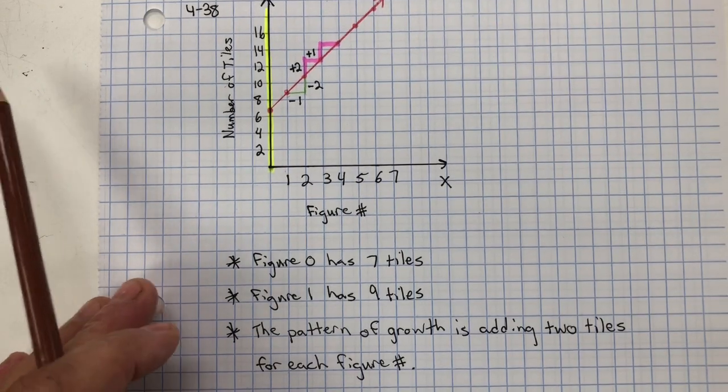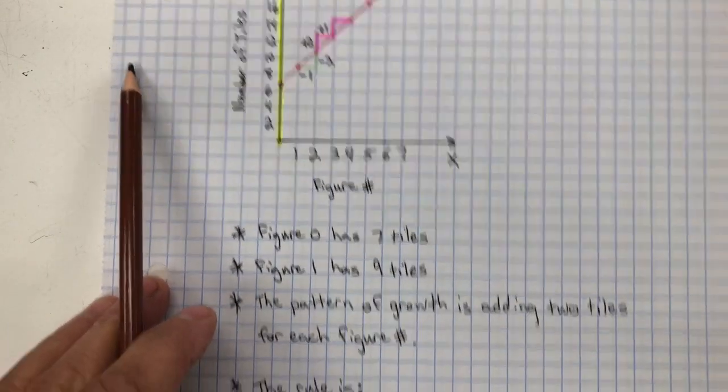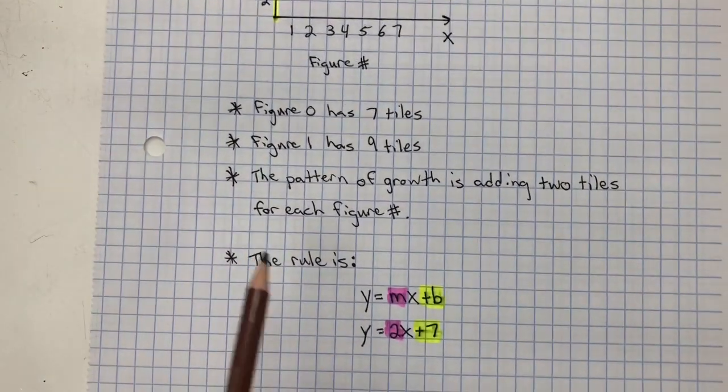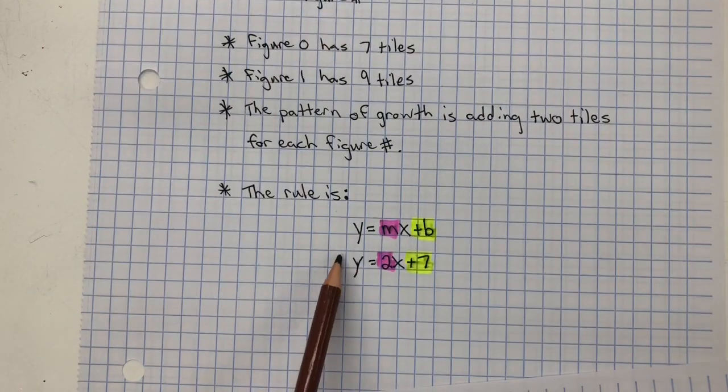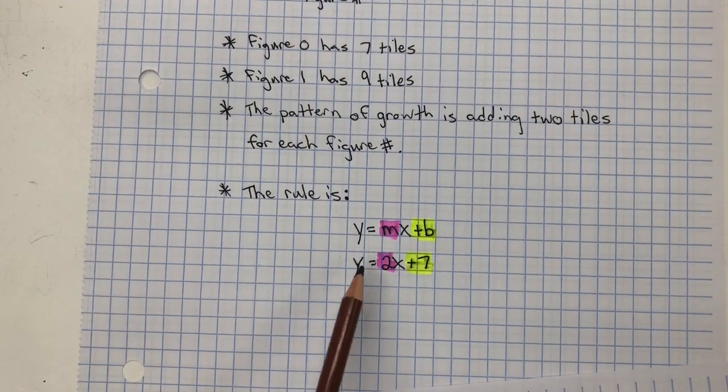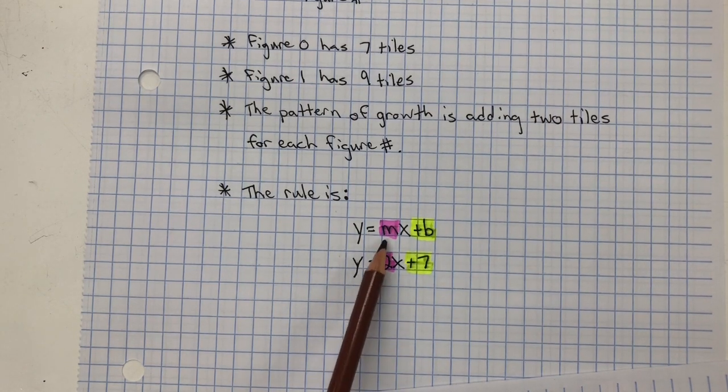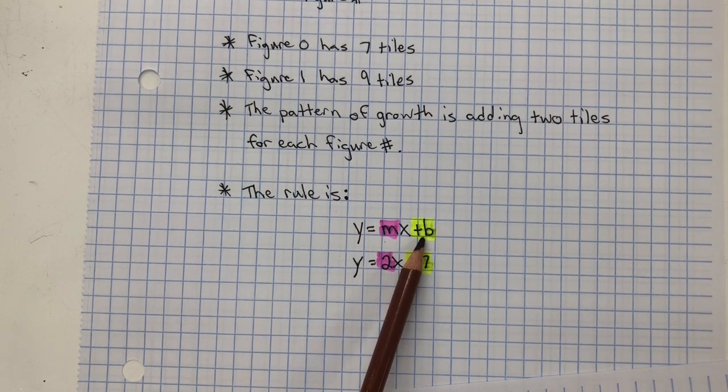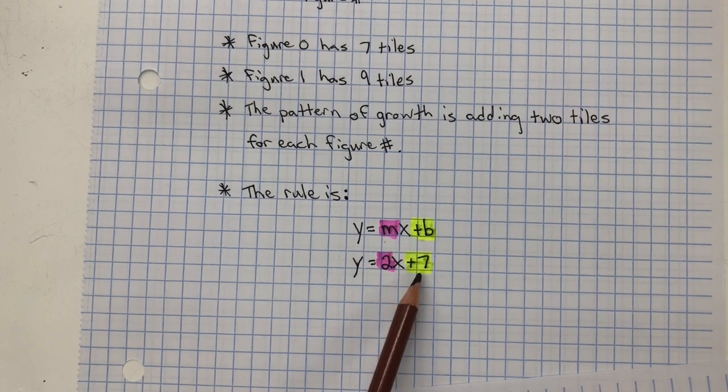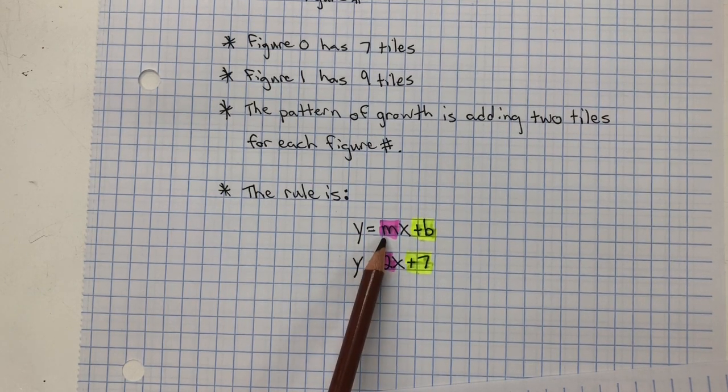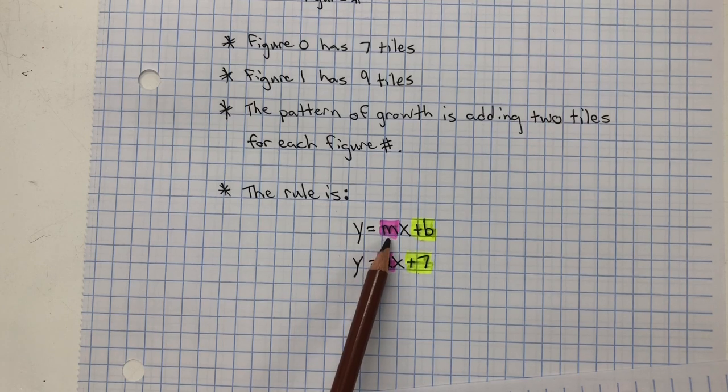The last part was asking for the rule for this. In the rule, in Y equals MX plus B form, remember the B is the Y-intercept, the initial value, what you started with, and the M is the growth rate. What is it growing by?